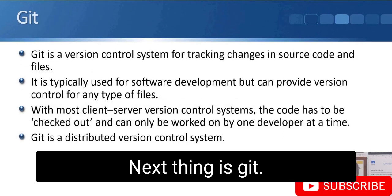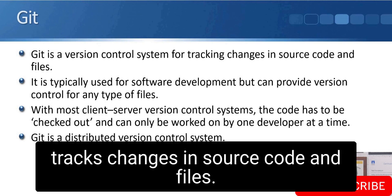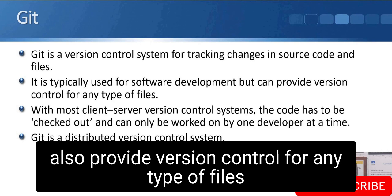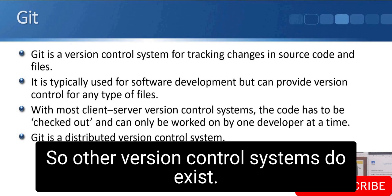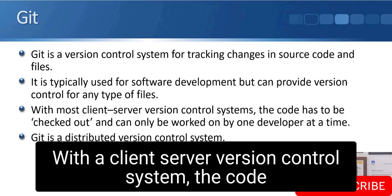Next is Git. Git is a version control system which tracks changes in source code and files. It's typically used for software development, but it can also provide version control for any type of file. While other version control systems do exist, Git is by far the most popular one today.